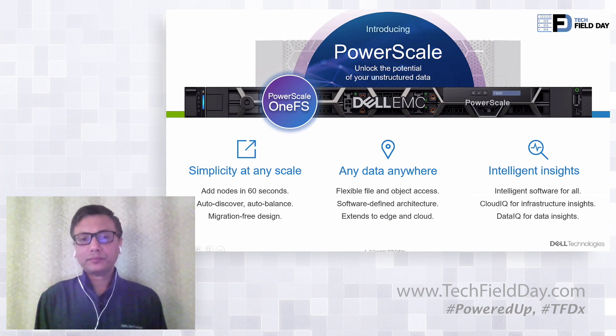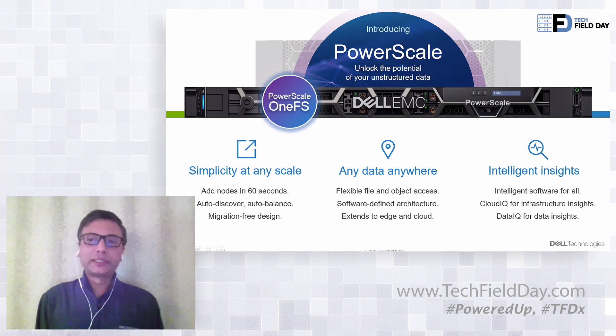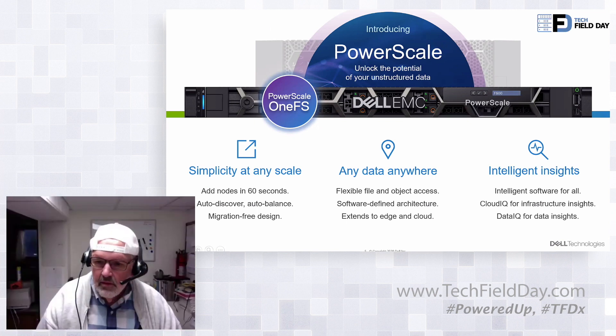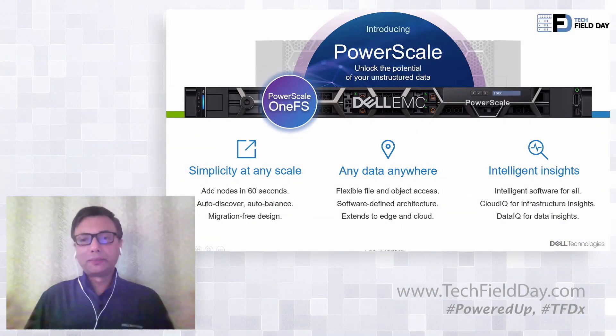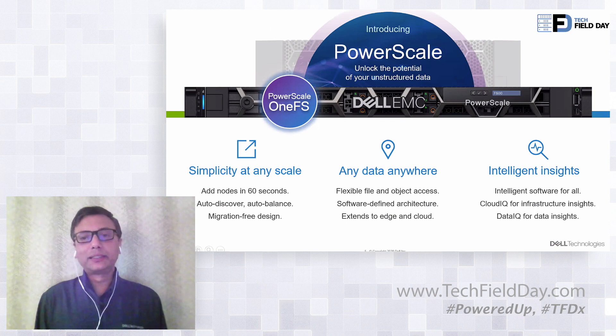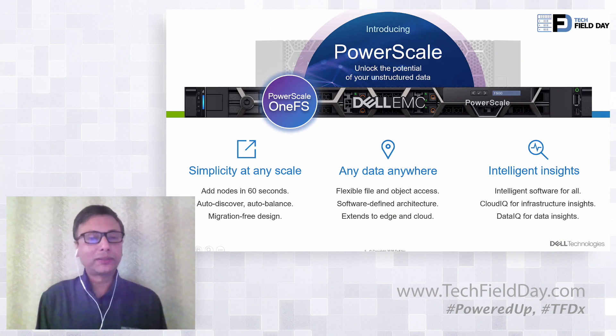What's the smallest configuration for an edge solution? Our smallest cluster with this new PowerScale launch is a three-node system, and the lowest capacity you can get with that three-node cluster is 11 terabytes raw capacity. The third pillar is intelligent insights. Customers do not have good visibility into what data they're storing. So we're giving customers insight into that data: what type of data is being stored, where it's being stored, how much it's costing, whether there's duplicate data, and whether it's being stored at the right place.